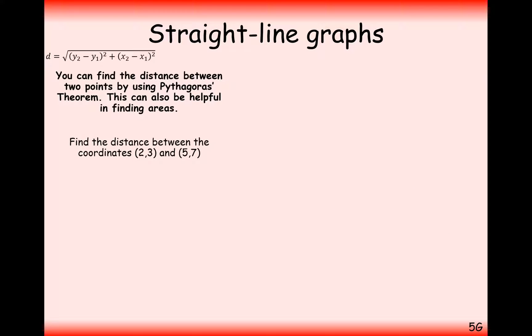So for example, let's have a go at this basic question here. Find the distance between the two coordinates (2,3) and (5,7). So the way that I'd approach this is just draw out a really quick sketch. (2,3) is the coordinate that's here. (5,7) is going to be up here. Now what I need to do is I need to go along 3 to get from 2 up to 5, and I need to go up by 4 to get from 3 up to 7.